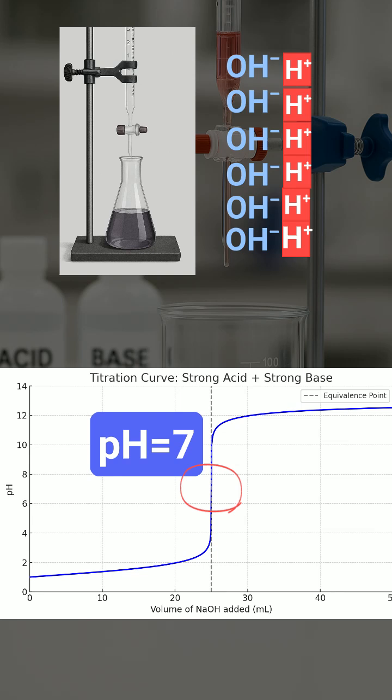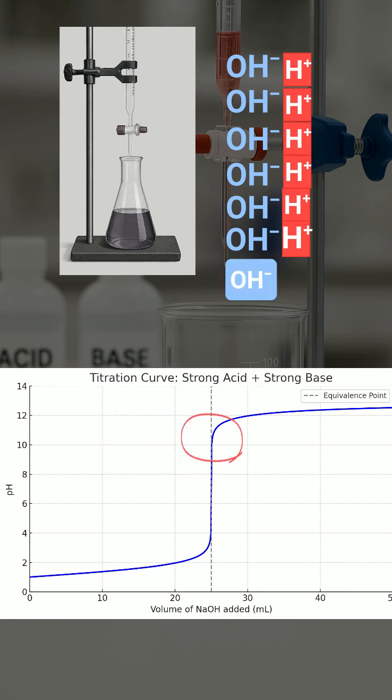That's why the pH is exactly 7 at equivalence in a strong acid-strong base titration. Beyond the equivalence point, the base is in excess. Now the OH- ions dominate, and the pH climbs quickly into the basic range.